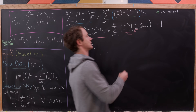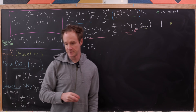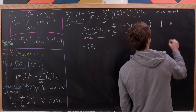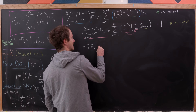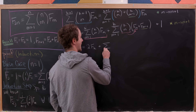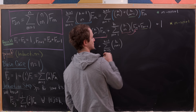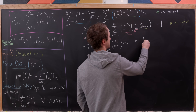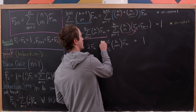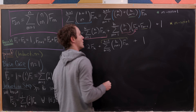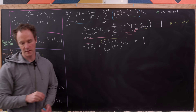Now I'll take the f sub m-1 term and do another re-indexing step, again replacing all m's with m+1's. That leaves me with plus the sum as m goes from 0 to k-1 of k choose m+1 times f sub m, plus 1 on the outside. The yellow part comes from that re-indexing, and the pink underlines come from the induction hypothesis applications on the previous line.